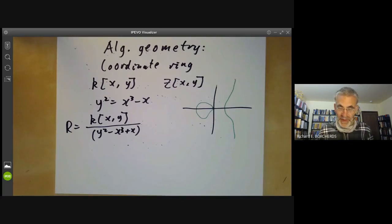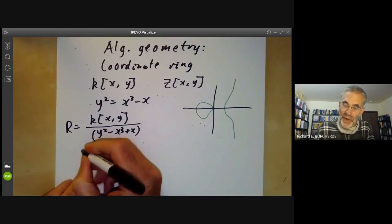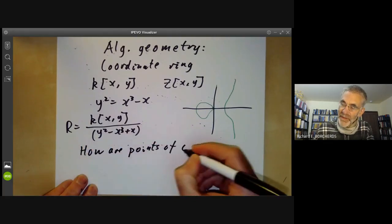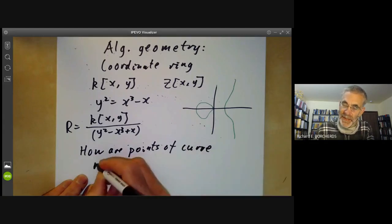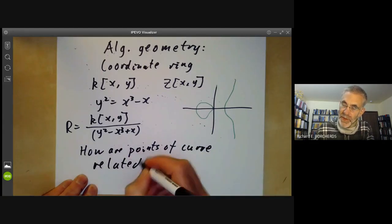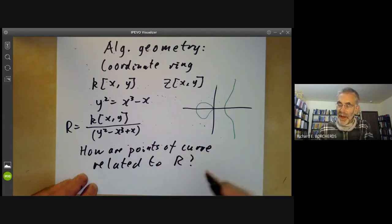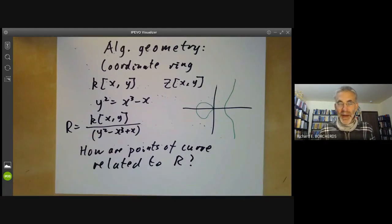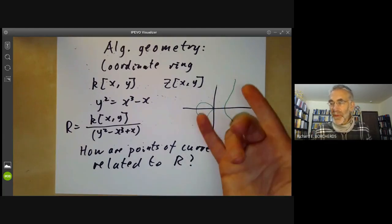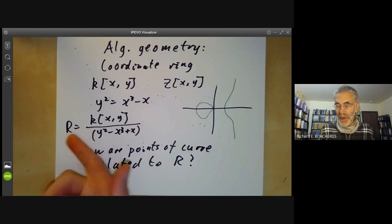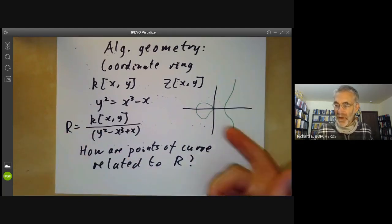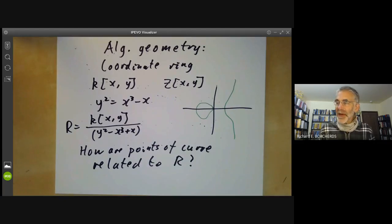You can ask other questions like, how are points of this curve related to the ring R? In other words, suppose you start with an elliptic curve and form its coordinate ring, and then you very carelessly lose the elliptic curve and can't remember what it is, but all you have is the coordinate ring. The question is, can you reconstruct the elliptic curve from the coordinate ring? In fact, you can.